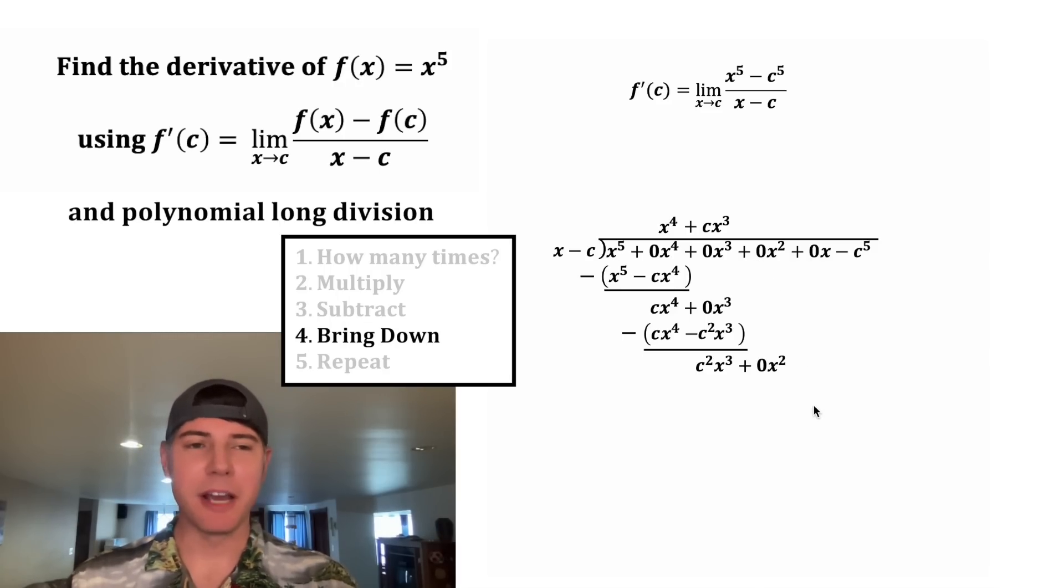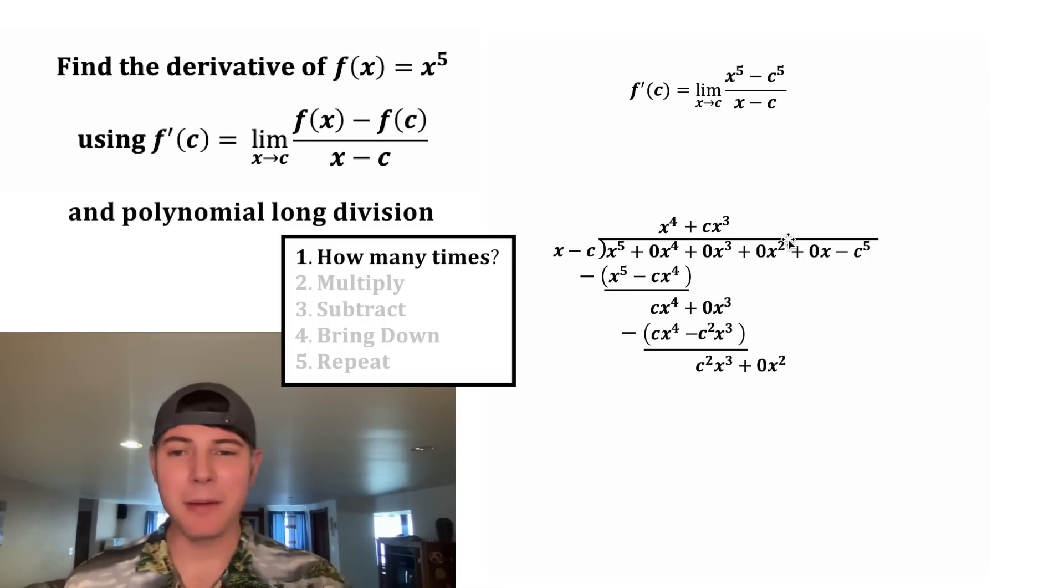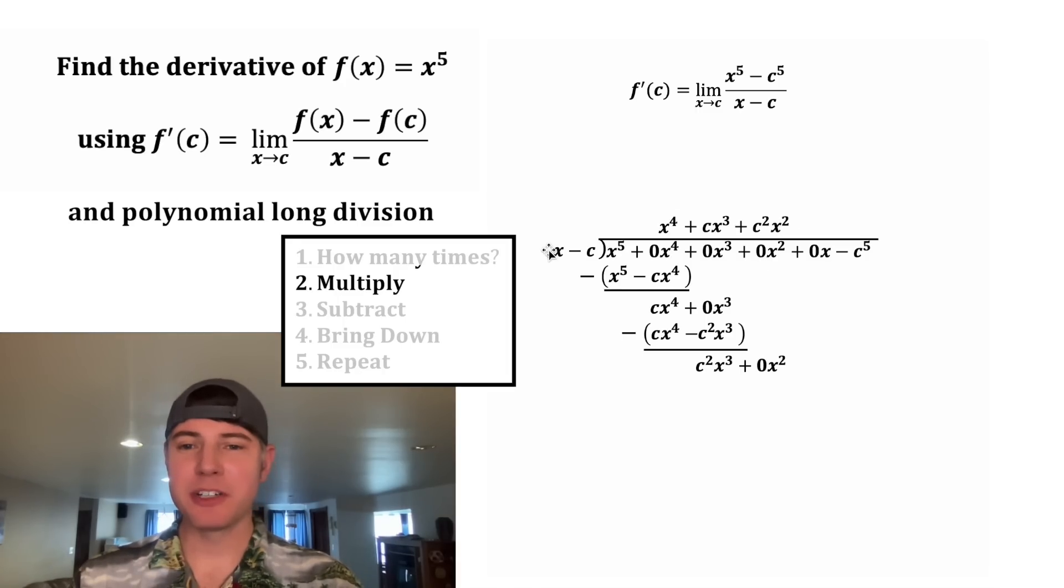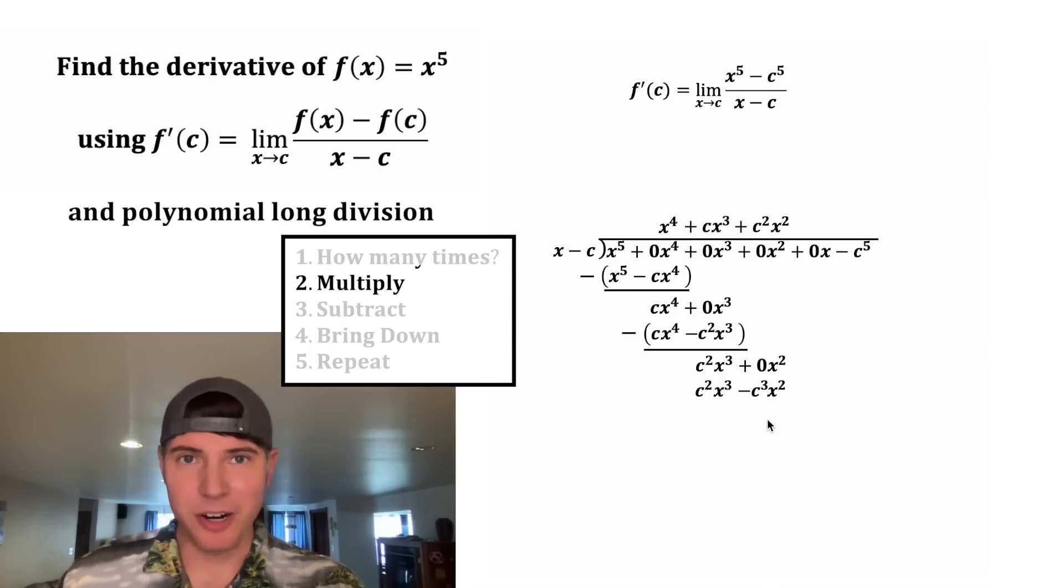And then we can bring down the 0x². So our next step is to find how many times x will fit into c²x³. And that's going to go up here. It'll be c²x². Now c²x² times x is c²x³. And c²x² times negative c is going to be negative c³ times x².